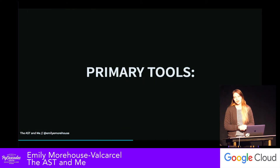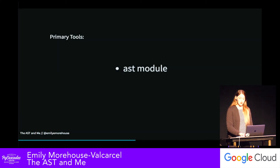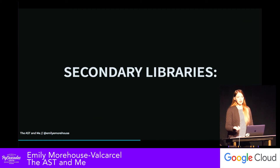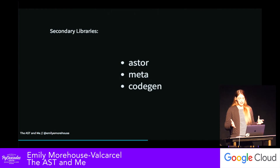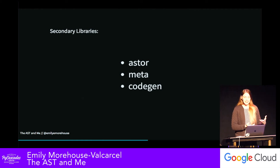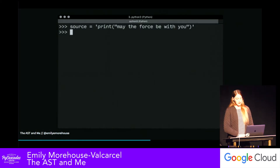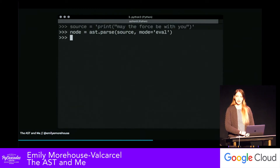A few primary tools we're going to use are libraries built into the Python language itself. The first is the AST module. We'll also use the dis module, which is short for disassembler. There are also some other interesting libraries: one is called Aster, another is Meta and CodeGen. Some of these don't fully work with Python 3, but for the most part they do. We'll start with a very simple piece of Python code — a print statement that takes in a string as its argument. We can take this source and generate an AST using AST.parse.